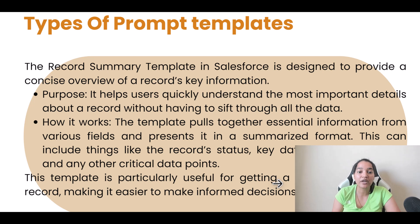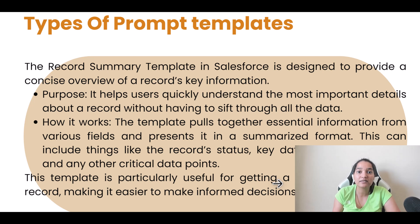The third type of template is the record summary template, which is designed to provide a concise overview of a record's key information. On a particular record there can be hundreds of fields, and it is impossible to glance through each of those fields to figure out the important information. This template fetches a concise overview of the important pieces of information available in your record, helping users quickly understand the most important details without having to sift through all the data.